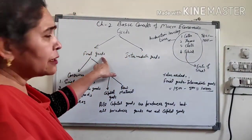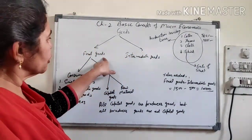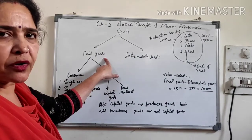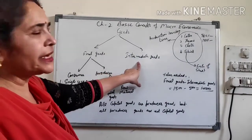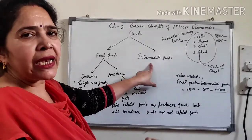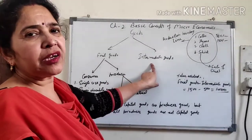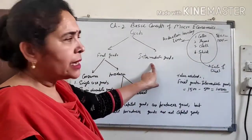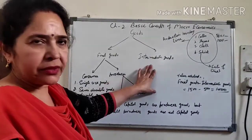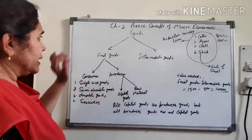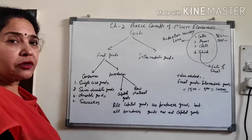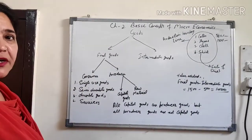To summarize: final goods are those goods which are finally consumed by the household sector, and intermediate goods are those goods which still have to go into a further production process and value is still to be added in them. Now, final goods may be consumer goods or producer goods.